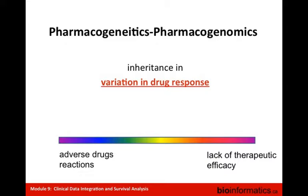Throughout this course you've heard about different types of biomarkers including point mutations, gene copy number alterations, aberrant gene expression, and aberrant transcript generation such as fusions. We can use biomarkers to classify tumors for better diagnosis, monitor disease progression, predict disease recurrence, and ultimately select appropriate therapy and predict response to it. The ultimate goal is to select the most appropriate therapy based on the particular molecular characteristics of a tumor.